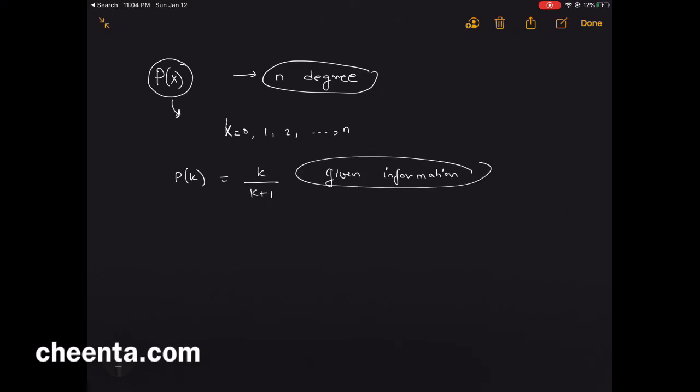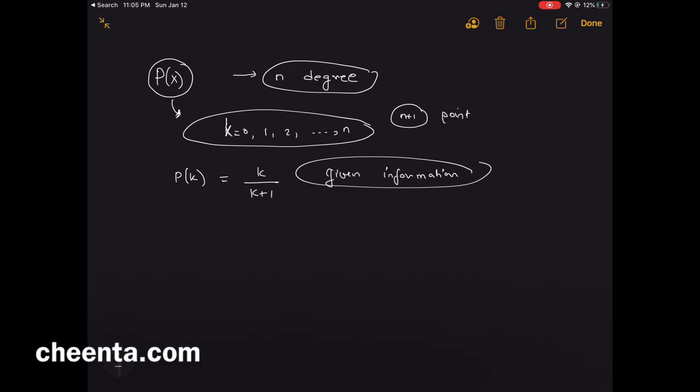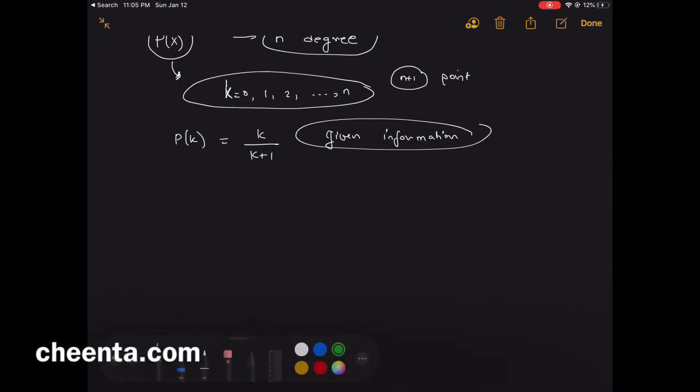This is quite something because you see, you now have knowledge about the value of the polynomial at n plus 1 points, and this is an n-degree polynomial, so you can hope to know almost anything about this polynomial. Now we want to understand the value of this polynomial at n plus 1. This is a question from an ISI entrance; it's also from a Soviet Union olympiad.